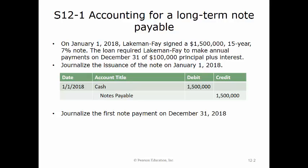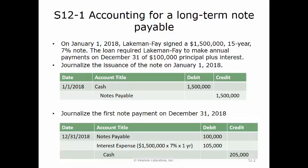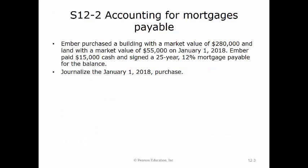Next, the problem asks that we journalize the first note payment on December 31st, 2018. To make this entry, we would debit notes payable for the $100,000 principal payment and debit interest expense for $105,000, which is equal to 7% of $1,500,000 for one year. Last, we would credit cash for the total payment of $205,000.